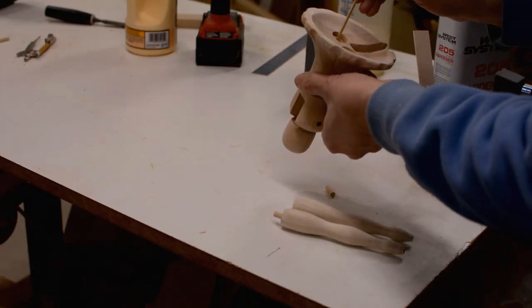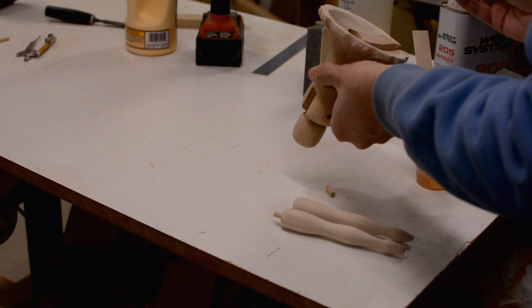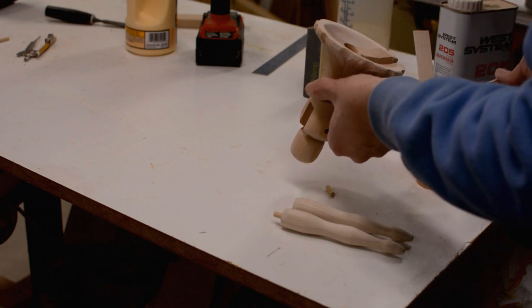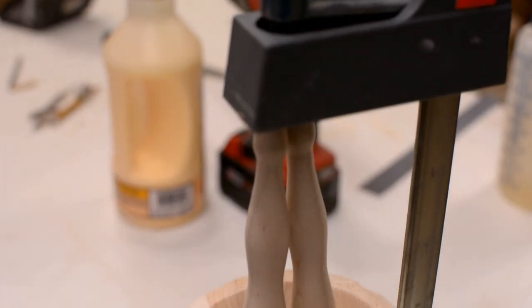The legs and arms are attached with quarter-inch dowels. For the ballerina, I also made a shallow counterbore, since the legs wouldn't have fit tightly against the curved underside of the dress.